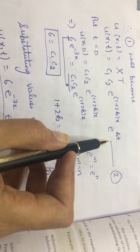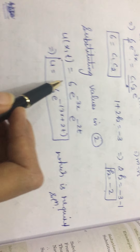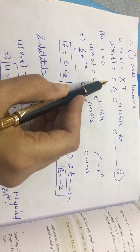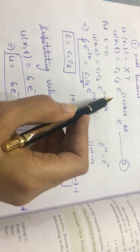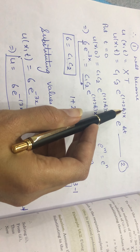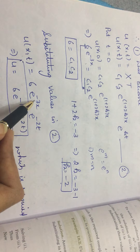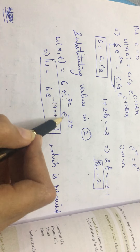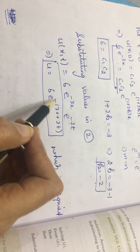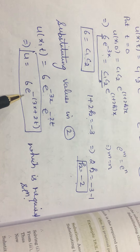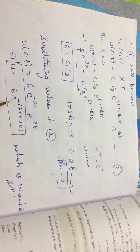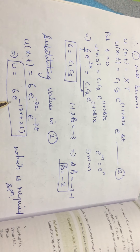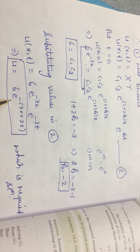Putting these two values back into equation number 2: u(x, t) = 6·e^((1+2(-2))x)·e^(-2t) = 6·e^(-3x)·e^(-2t). Combining the exponents, the required solution is u(x, t) = 6e^(-3x - 2t). This is the type 2 question of the method of separation of variables, where you apply the initial condition to find the constants.